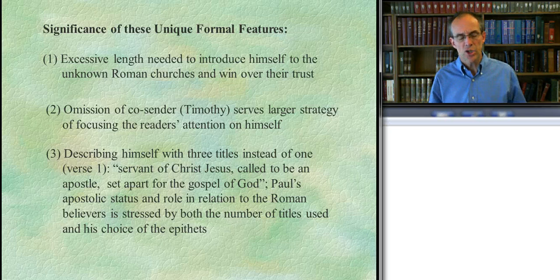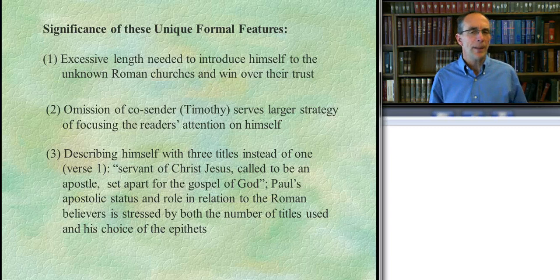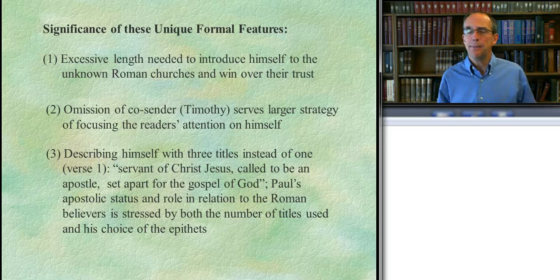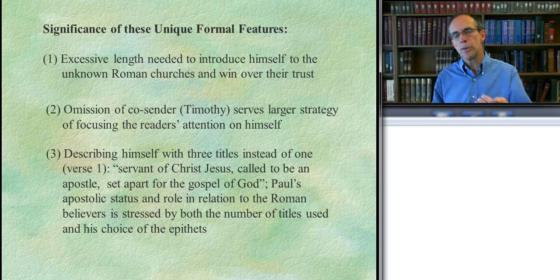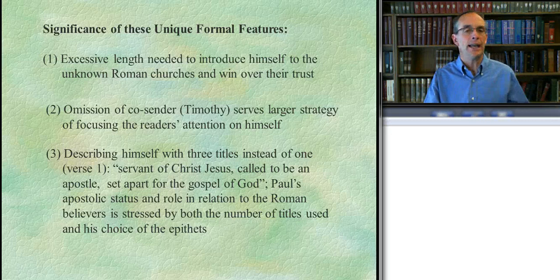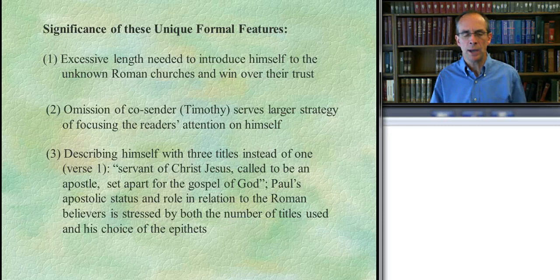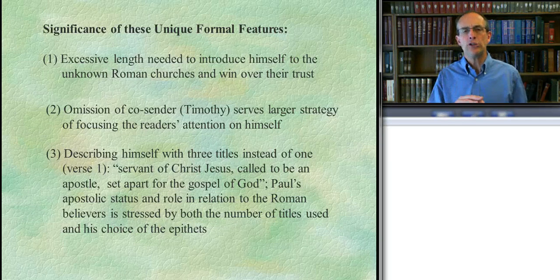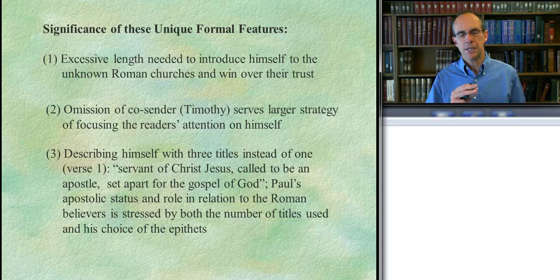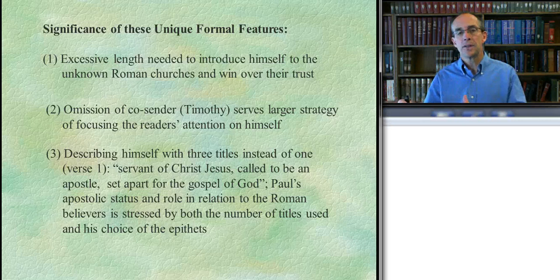Notice the second title. He's not just an apostle, but we have the verbal idea: he's called to be an apostle. This is what we call in grammar a divine passive. That's a technical term — don't be intimidated by it. It means that the passive voice is used but you don't say who the agent is, and the unspoken agent is God. If I say actively 'Wyma teaches the online class,' the verb is active. But I could say passively, 'The online class was taught by Wyma.'